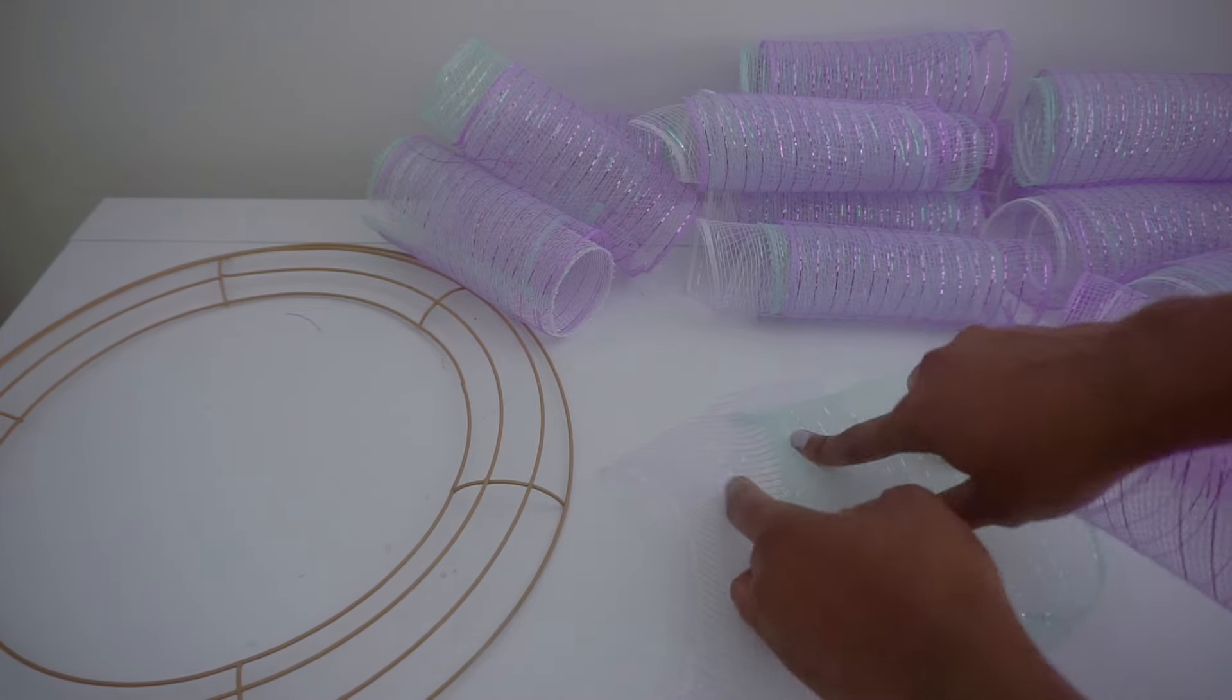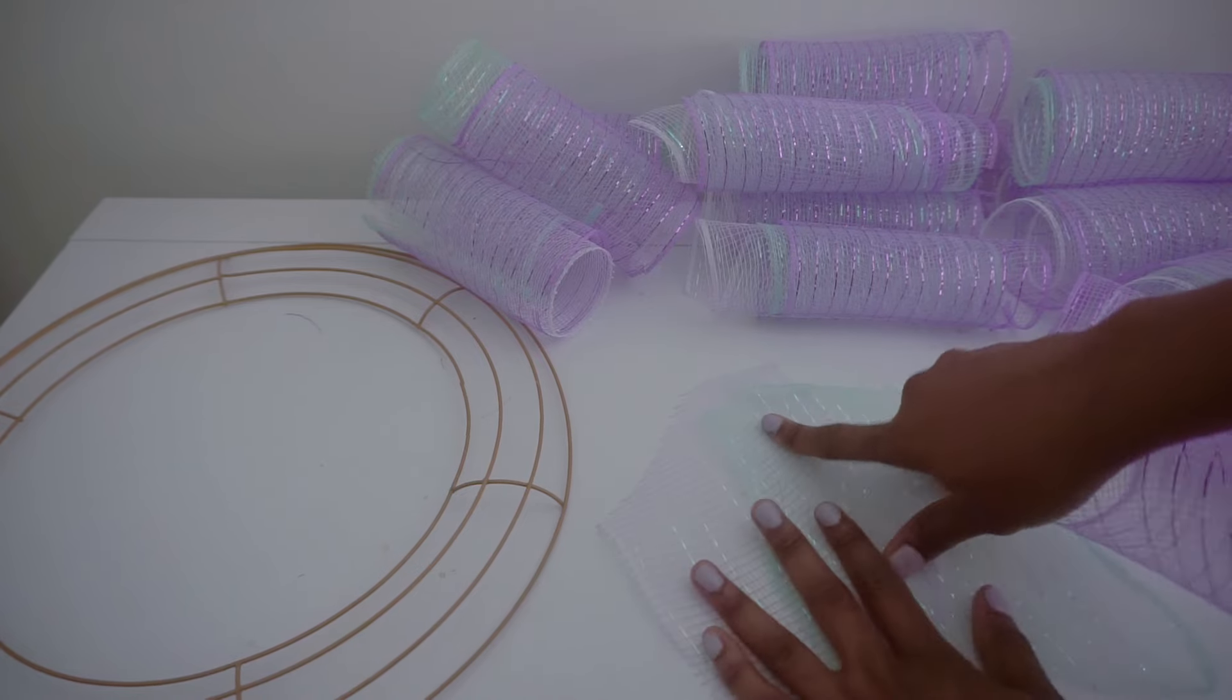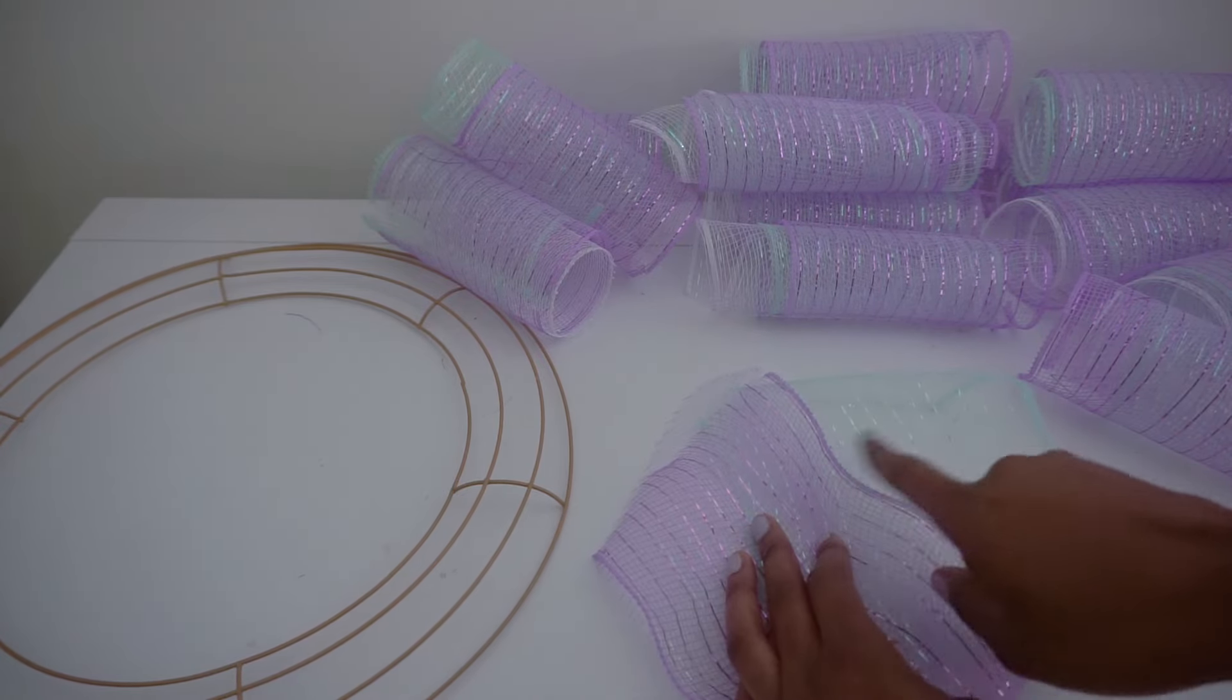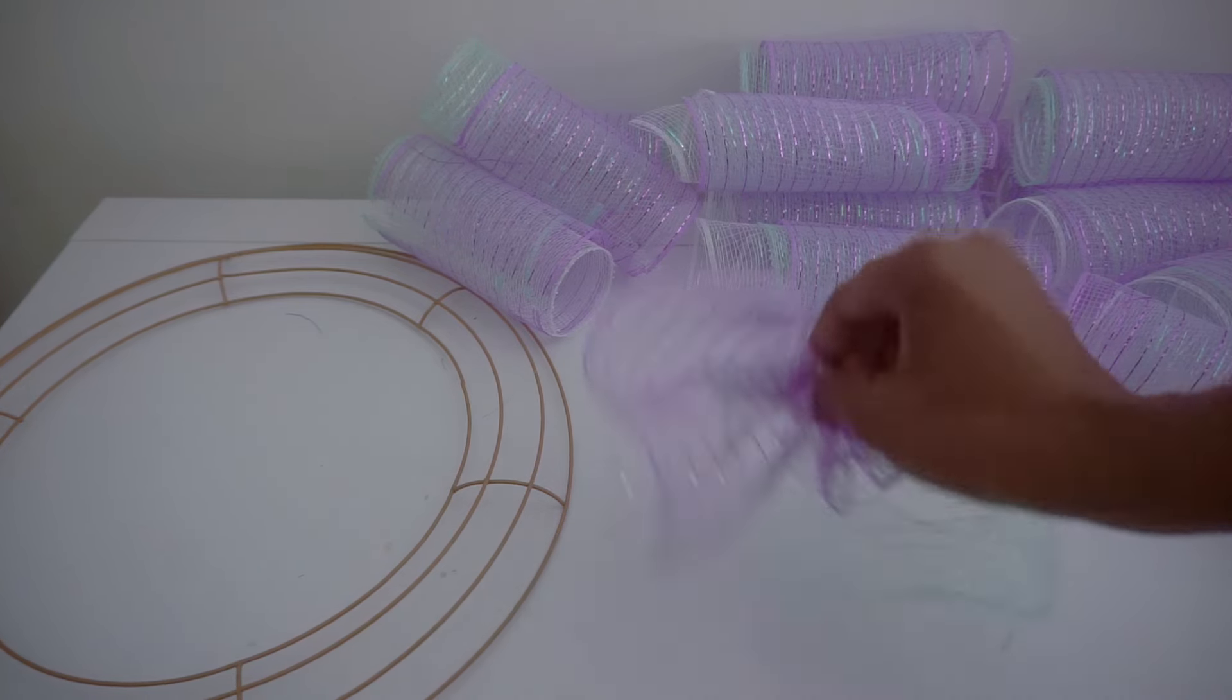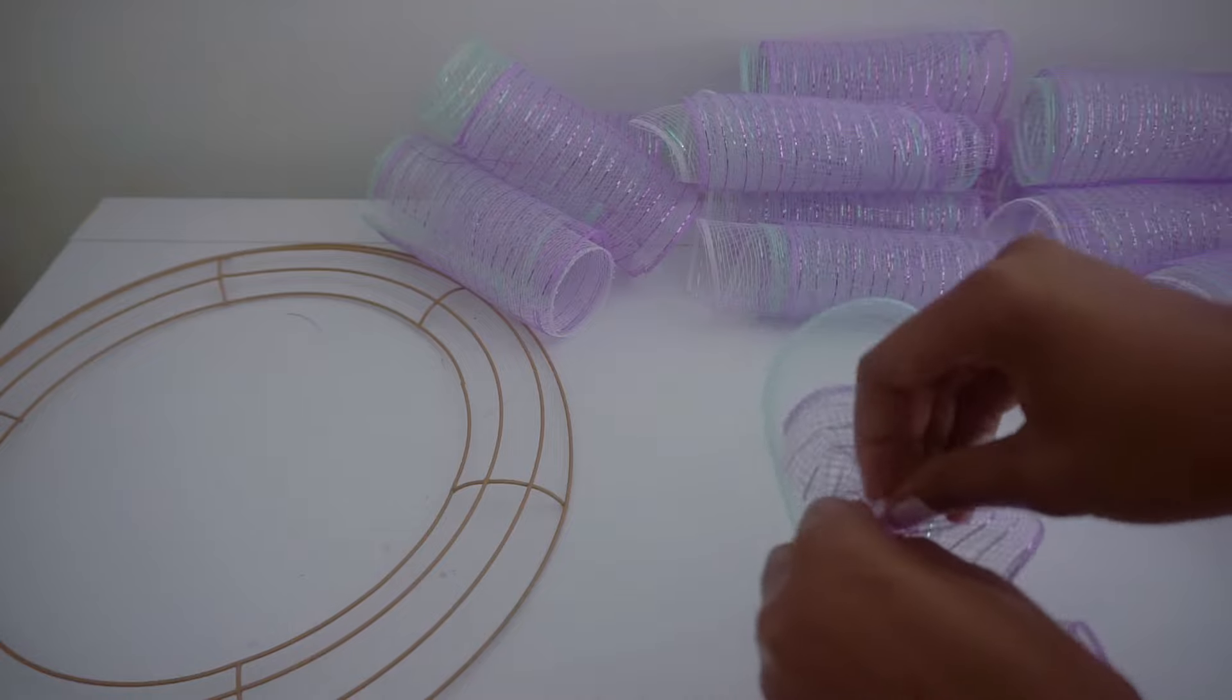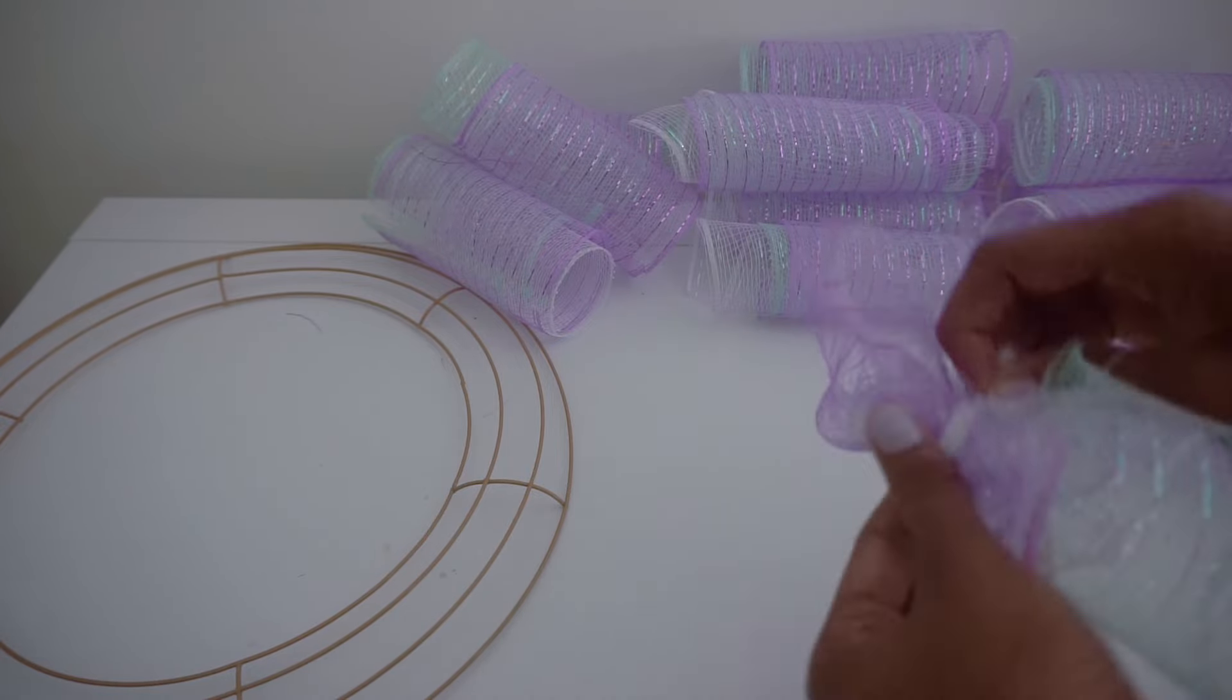And then I have them overlapping in the middle and I'm going to scrunch, scrunch, scrunch just like that. Take my stem and twist it a couple of times and flare it out.